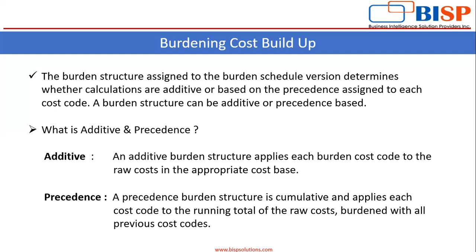Additive: an additive burden structure applies each burden cost code to the raw cost in the appropriate cost base. Precedence: a precedence burden structure is cumulative and applies each cost code to the running total of the raw cost burdened with all previous codes.